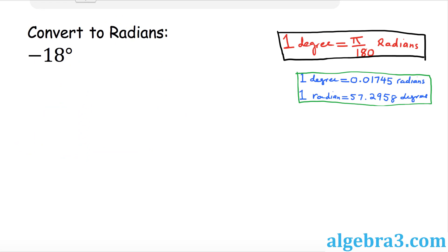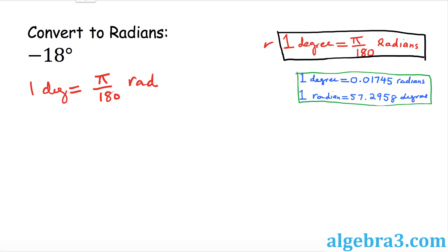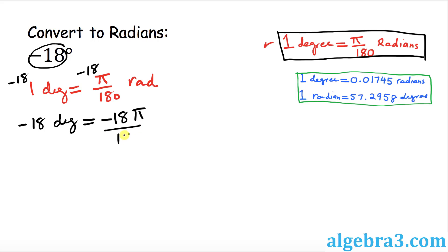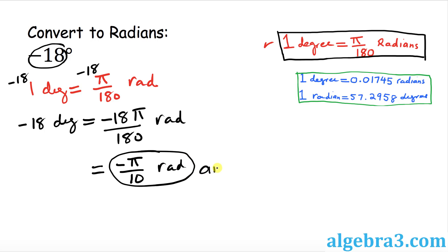Let's look at this example: we have negative 18 degrees and we want to convert to radians. Recall that one degree equals pi over 180 radians. Multiply both sides by negative 18, so negative 18 degrees equals negative 18 times pi over 180 radians. Reducing that gives us negative pi over 10 radians. That is our answer.